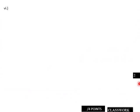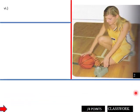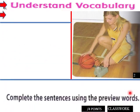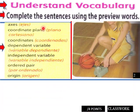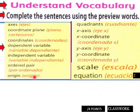Understanding vocabulary: complete the sentences using preview words. Here are our new preview words: axes, coordinate plane, coordinates, dependent variable, independent variable, ordered pair, and origin. Further: quadrants, x-axis, x-coordinate, y-axis, y-coordinate, scale, and equation. We have a lot of new preview words here, students.